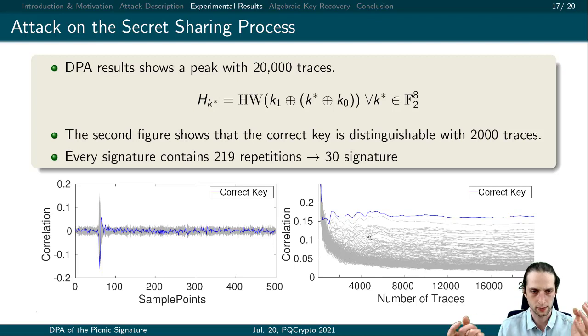Moreover, the correct key is distinguishable with less than 2,000 traces. Remark that every signature has repetitions - we have 219 repetitions. We select the repetitions that give us the same challenge. For example, if we choose the same MPC-LowMC repetitions for challenge C0, this will give us roughly 30 signatures. When we collect 30 signatures, we will have roughly 2,000 traces that belong to the same challenge. Therefore, we can use the open values for those traces.